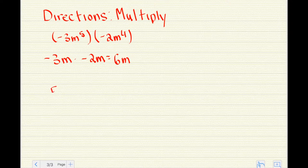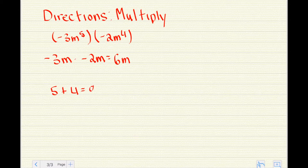The second thing we need to do is add the exponents. 5 plus 4 equals 9. So our final answer will be 6m to the 9th power.